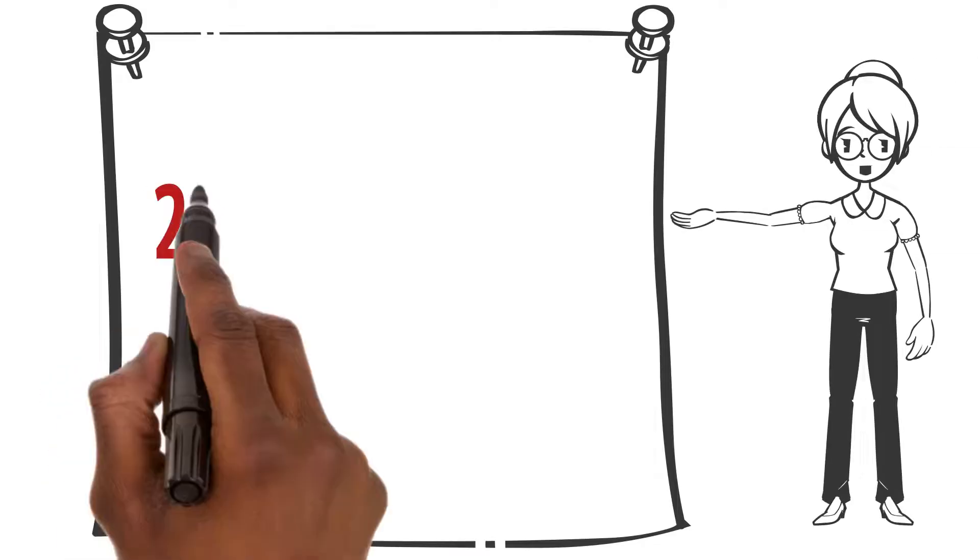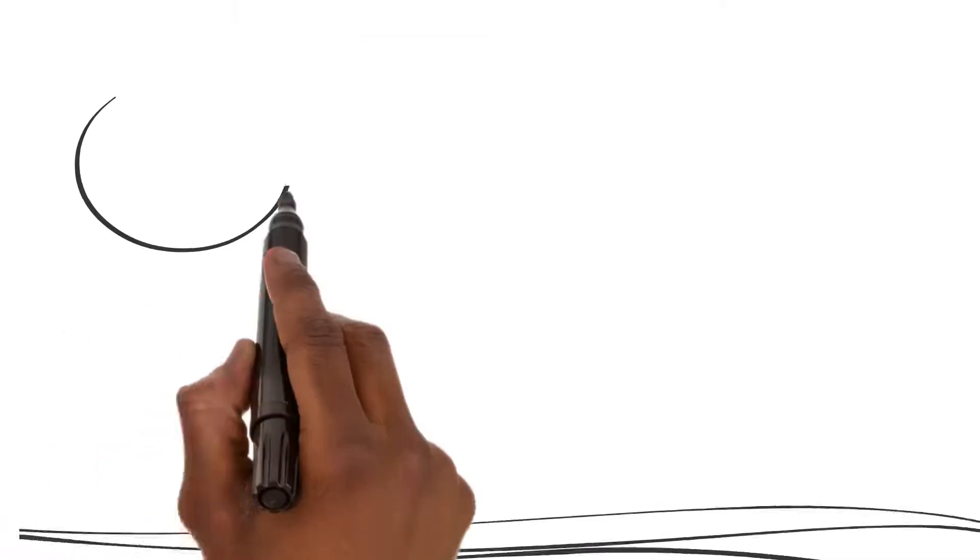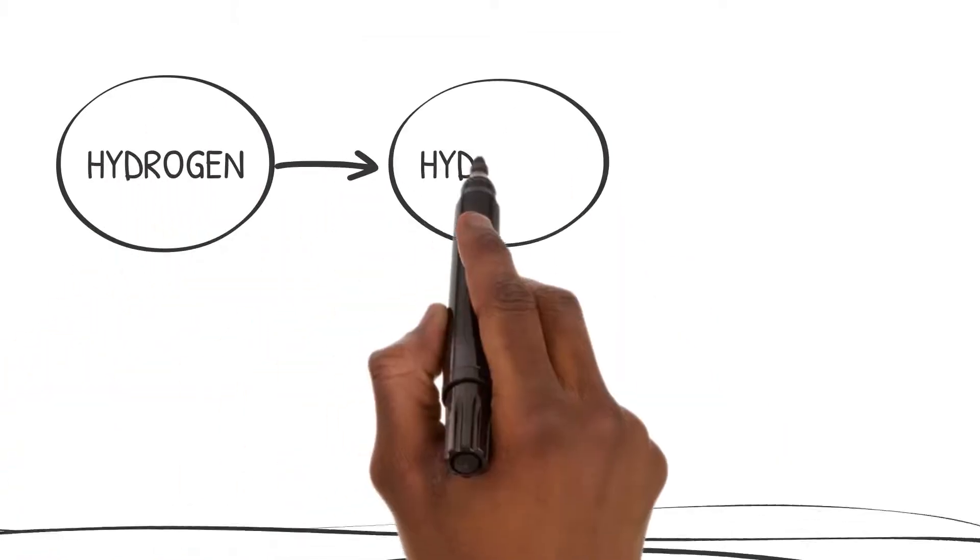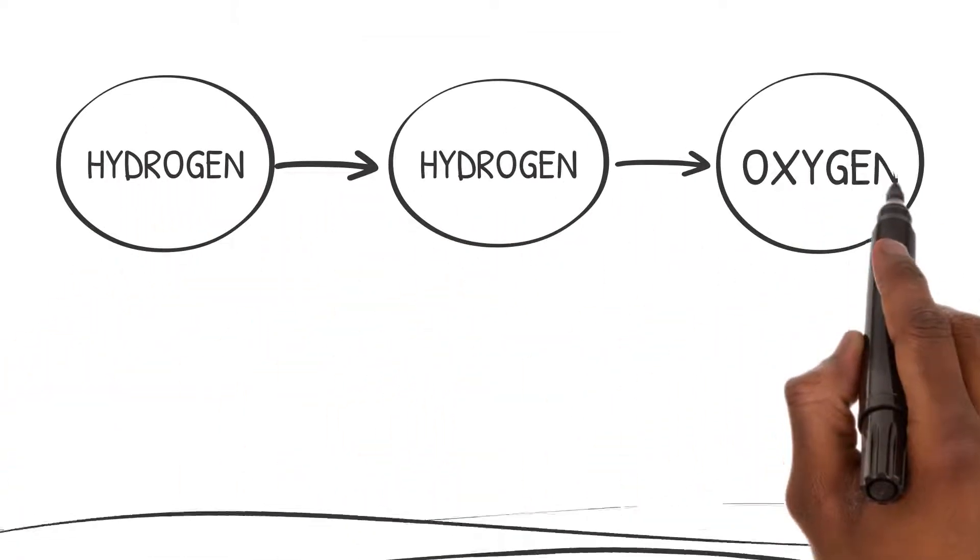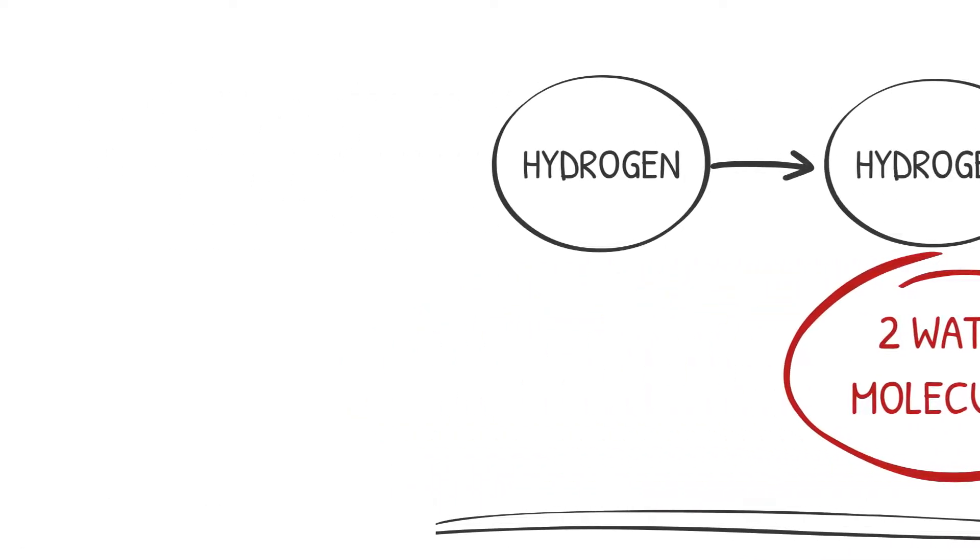We write it as 2H2 + O2 gives 2H2O. It tells us that two molecules of hydrogen gas combine with one molecule of oxygen gas to produce two molecules of water.